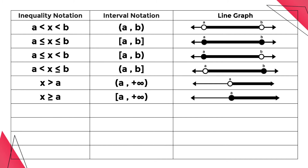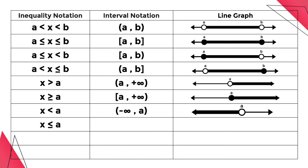Next, it means all real numbers x less than a, which is represented by this interval notation and by this graph. Next, we have all real numbers x less than or equal to a, which is represented by open parenthesis negative infinity, comma, a, close bracket. And this is how it looks like in the graph.